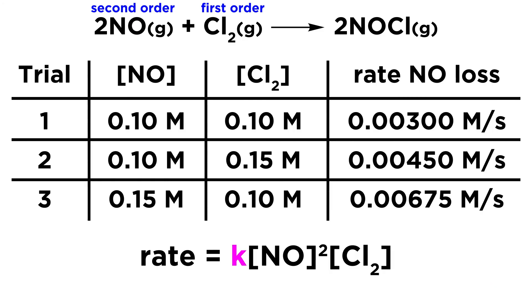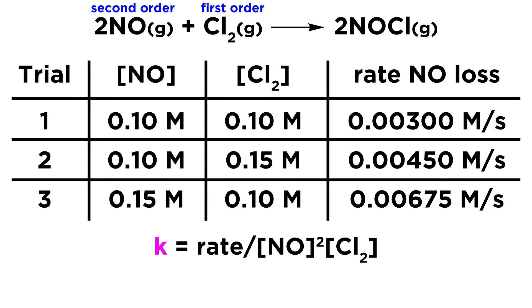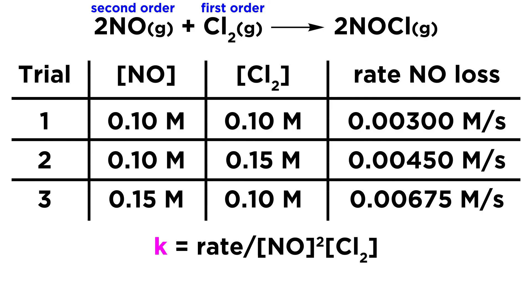So now we want to solve for the rate constant, K. Now that is going to be very easy, so first let's solve for K in the rate law, and to do that, we just divide by those concentrations. So the rate constant is going to be equal to the rate divided by NO concentration squared times Cl2 concentration. And now in order to solve for that rate constant, we can just use the data from any trial we wish. So let's just arbitrarily choose trial 1, and we just plug everything in.